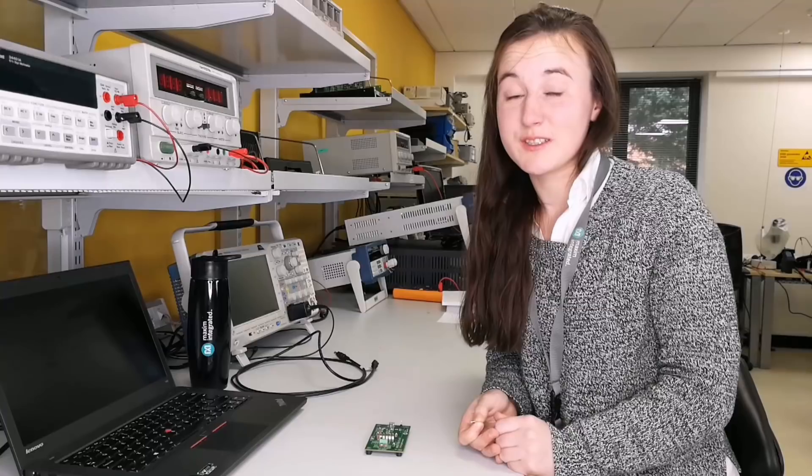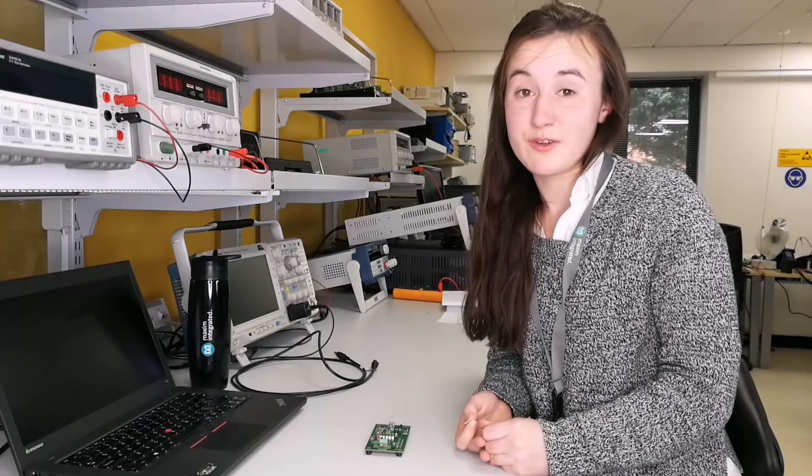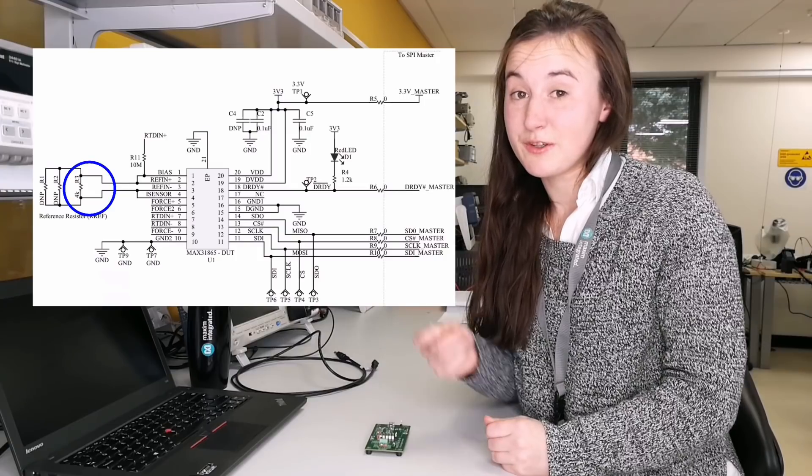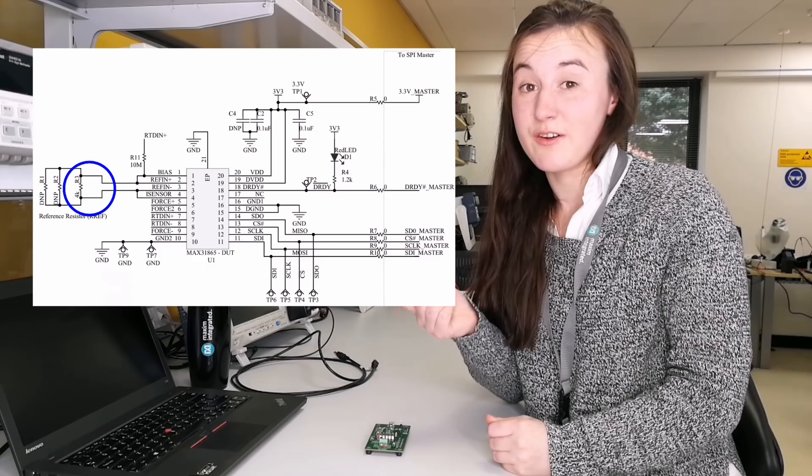The EV kit out of the box is optimized for a PT1000, but say you wanted to use a different RTD, for example, a PT100 like I have here. All you need to do is change the reference resistor at R3.